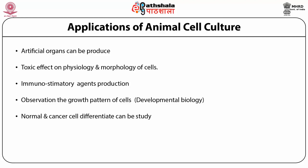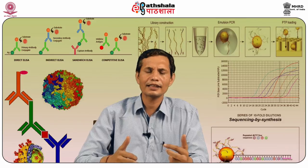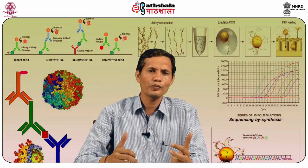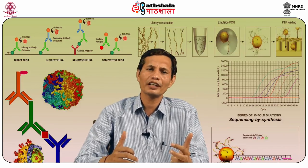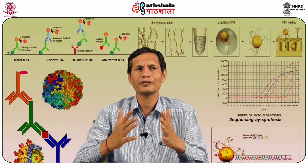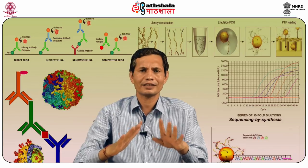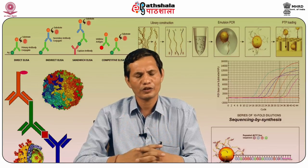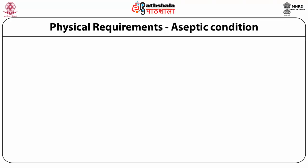Although animal cell culture started in a simple way at the initial stage, today we require many instruments to maintain it properly. We require various types of instruments and reagents to produce useful substances. The basic requirements for animal cell culture technology can be broadly divided into three categories: physical, chemical, and biological.